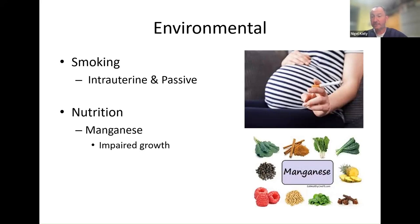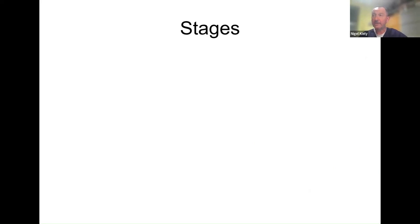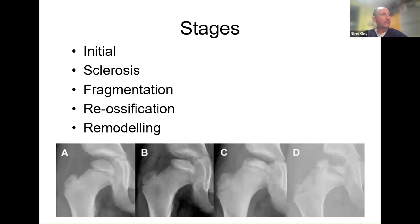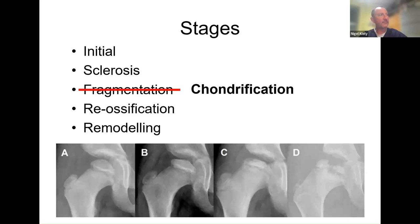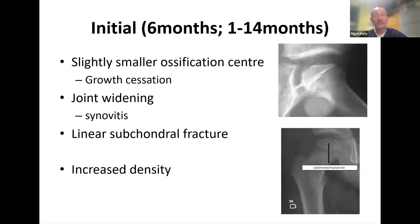Once we diagnose Perthes we know it goes through a natural process where bone dies, new blood vessels come in, the dead bone is taken away, new bone is laid down, the bone re-heals and remodels. There's very little we can do to influence that biological process — that's just nature doing its thing. We describe different stages: an initial stage when the child first presents, then sclerosis — increased density of the bone — then it starts to collapse and fragments, then it reossifies with new bone formation, then it remodels. The initial stage is about six months.